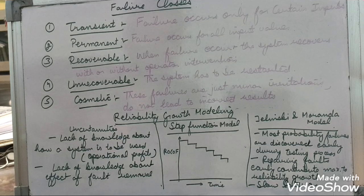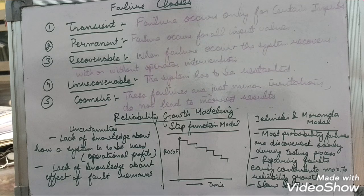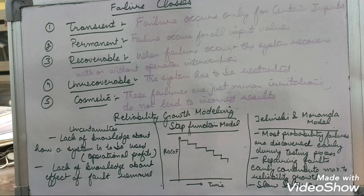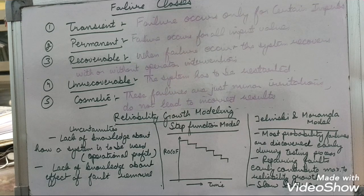As discussed in previous classes, reliability depends on the type of error. If the error is of a transient type, it won't affect reliability much. But if it is of an unrecoverable type, it will impact the software reliability in a large way. Before taking up the various models of software reliability, we'll look at the various classes of failure.